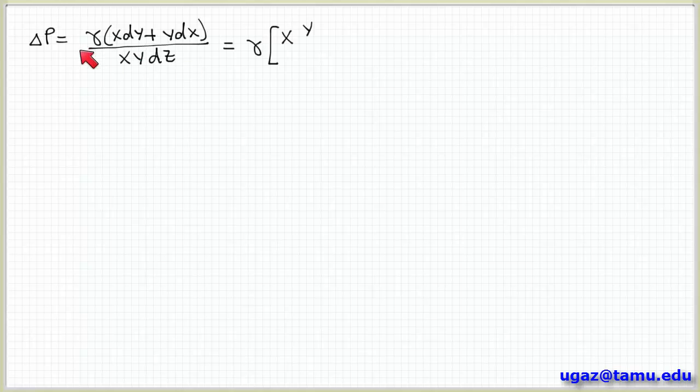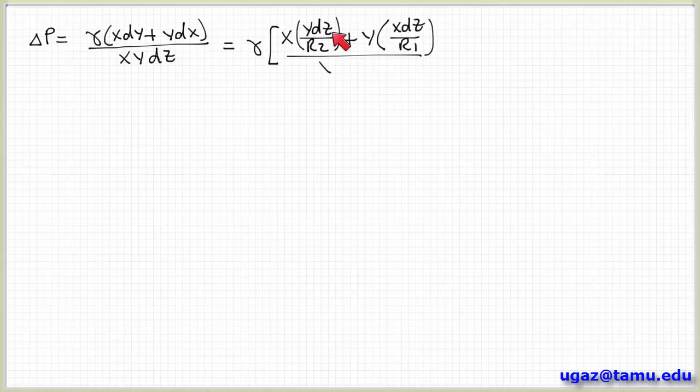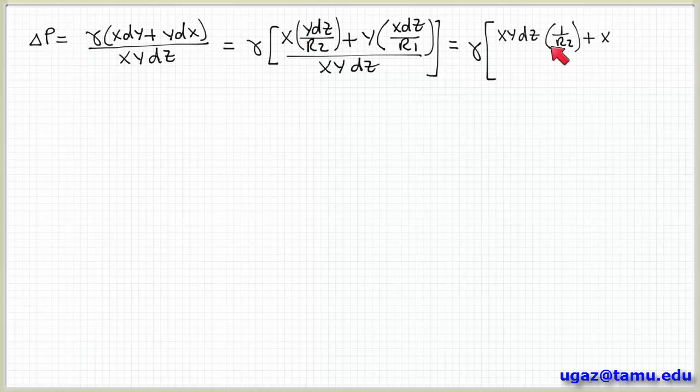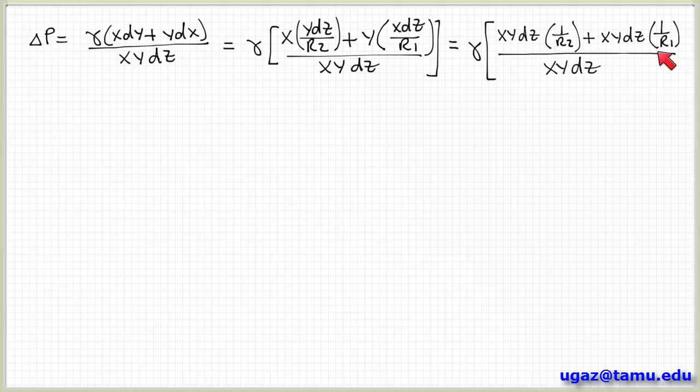Okay. So let me again just rewrite that here at the top of this slide. Okay. So if I solve for delta P then I can substitute for dy and dx in terms of the relationships that we derived on the previous slide in terms of dz. Now divided by x, y, dz. And then if I multiply through, I have x, y, dz times 1 over r2 plus x, y, dz times 1 over r1 over x, y, dz. So notice that each of these terms has the quantity x, y, dz in common. So this will cancel out.